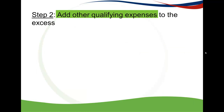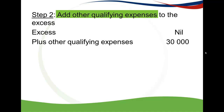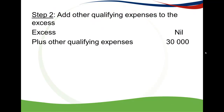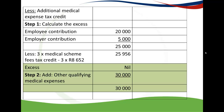The next step is to add your other qualifying expenses to the excess. Because our excess is zero, we simply add the other qualifying expenses of 30,000 Rand. Step two is done.